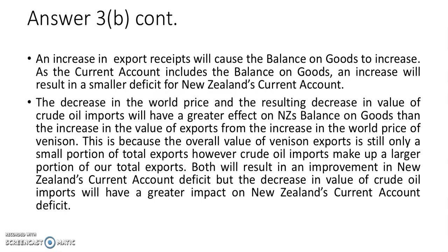The excellence question is more long-winded - we're comparing and contrasting two different models to see how each affects the current account. Both will actually improve the current account. The note on oil imports was key: the value of oil imports will decrease because the price fall is greater than the increase in quantity of imports, so the value of imports decreases, improving the balance of goods. Meanwhile, venison exports increase in both price and quantity, also improving the current account. So both improve the current account.